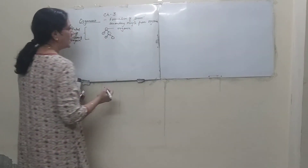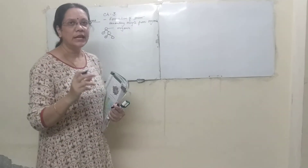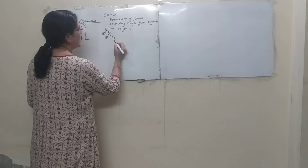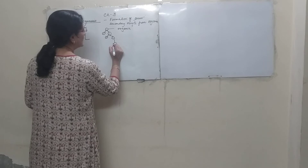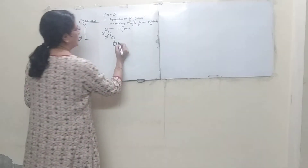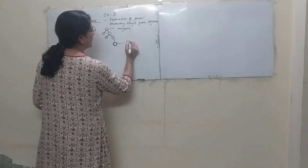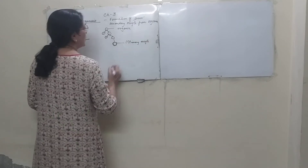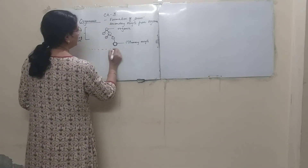At the time of birth, one oogonium gets surrounded by a granulosa layer and becomes known as a primary oocyte. It gets surrounded by a layer of follicular cells, and this is now called the primary oocyte. This transformation happens at the time of birth.